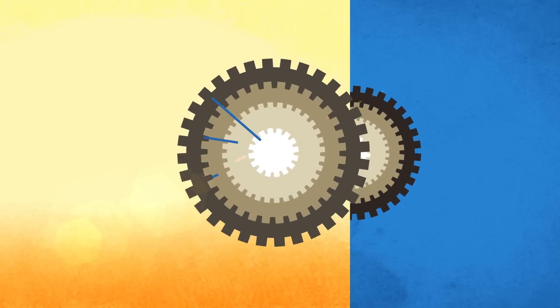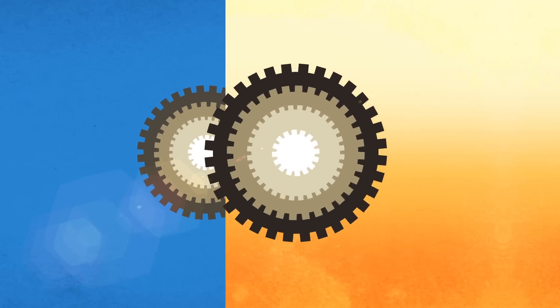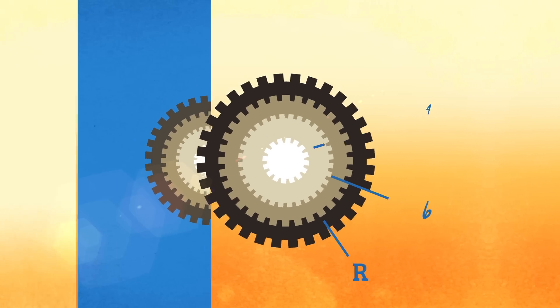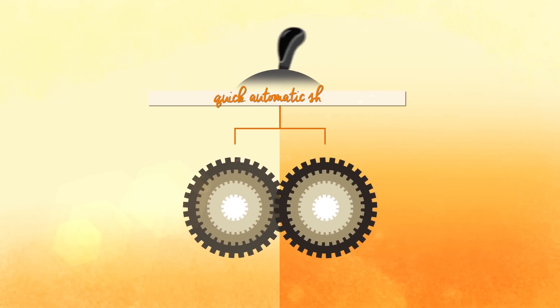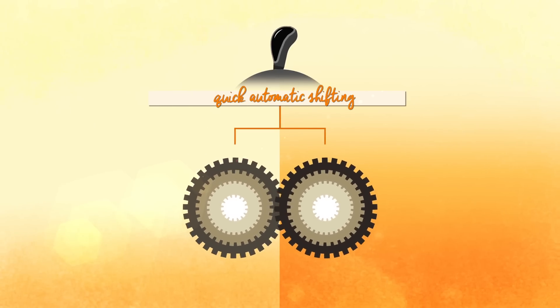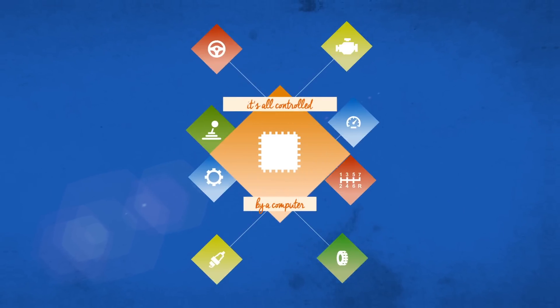One clutch operates the odd gears and the other operates the even gears. That's what enables quick, automatic shifting with almost no fluctuation of drive power. It's all controlled by computer.